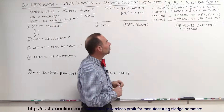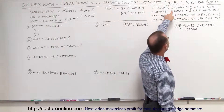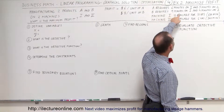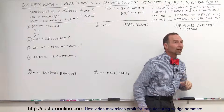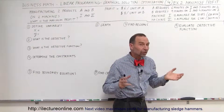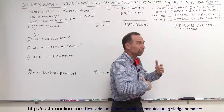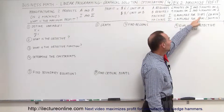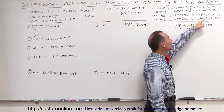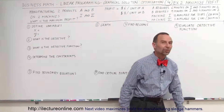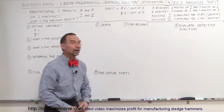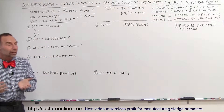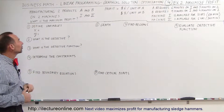But there are some constraints. Product A requires six minutes on machine one and five minutes on machine two. Product B requires nine minutes on machine one and four minutes on machine two. There's only so much time available on each machine — machine one for 10 hours per day and machine two for six hours per day, which is 600 minutes and 360 minutes respectively. We need to find how many of each unit to build to maximize the profit.